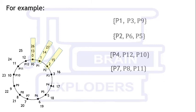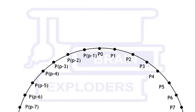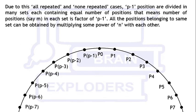Here four sets can be formed. In general, due to these all-repeated and none-repeated cases, P-1 positions are divided into many sets, each containing equal number of positions. That means the number of positions, say m, in each set is a factor of P-1.